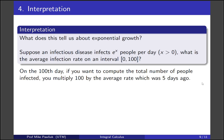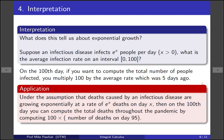Okay now we're going to give an example that relates to deaths and infection rates, so you may wish to skip this if it's a sensitive topic for you. So one application is under the assumption that deaths caused by an infectious disease are growing exponentially at a rate of e^x deaths on day x, then on the 100th day you can compute the total deaths throughout the pandemic by computing 100, so that's the number of days, times the number of deaths on day 95, and that'll tell you how many deaths there were total. I think this is quite counterintuitive because you would think maybe that you would multiply by a value that was closer to what happened on like day 50 or day 60, but this is one of the surprising things about exponential growth.